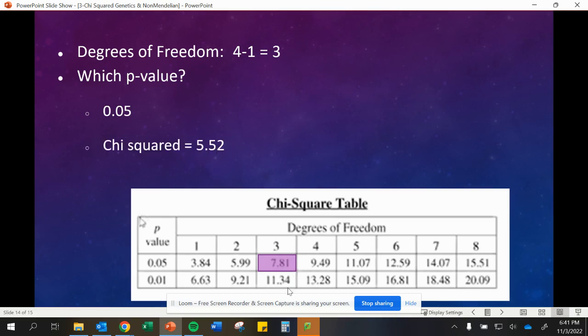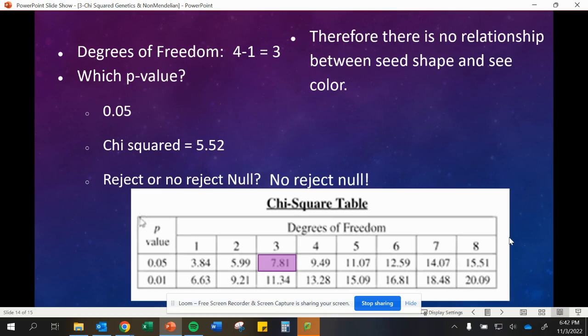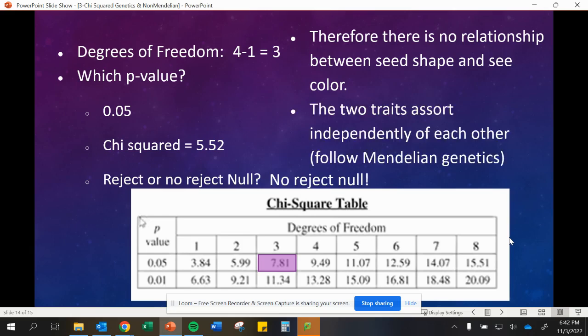Our chi-squared was 5.52, which is to the left of our 7.81. If you remember, that means that we can accept our null hypothesis. We're not rejecting our null hypothesis. We can support our null hypothesis. That's actually what we want. In this case, that means our guess about the inheritance, that 9-3-3-1 ratio is online. It's on point. No relationship then. Therefore, there is no relationship between our seed color and shape. The two traits are following Mendelian genetics. They are doing that independently of each other.